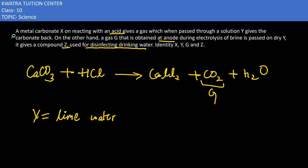Z is a compound used for disinfecting drinking water, which is chlorine gas. When chlorine gas is passed through dry lime water, it gives us bleaching powder. Calcium hydroxide reacts with chlorine gas to give calcium oxychloride.